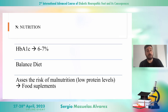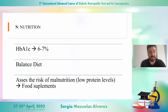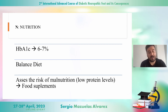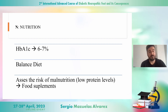Regarding nutrition, we know that high levels of blood sugar can cause delayed healing, so the regular levels of glycosylated hemoglobin must be between 6 and 7 percent. To achieve this, it's important that the patient continue with a balanced diet. Finally, it's important to know that low protein levels can also cause delayed healing.